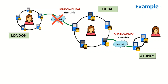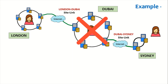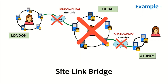Similarly, if something happens to the site link between Dubai and Sydney — say the internet goes down — the Sydney site will be completely isolated. Or if the entire Dubai office goes down due to some catastrophe, Sydney and London will be completely cut off from Dubai. In any of these three situations, the site link bridge comes to our rescue.